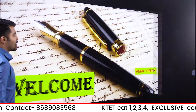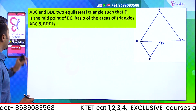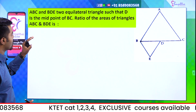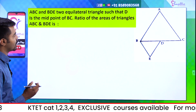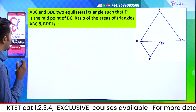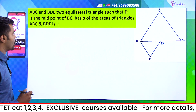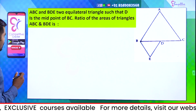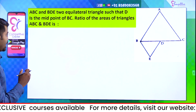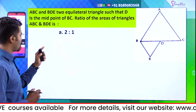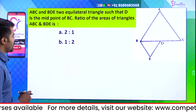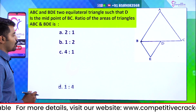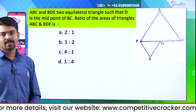Let's talk about the first problem. ABC and BDE are two equilateral triangles such that D is the midpoint of BC. The ratio of the areas of triangles ABC and BDE is: Option A, 2 is to 1; Option B, 1 is to 2; Option C, 4 is to 1; Option D, 1 is to 4.